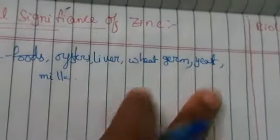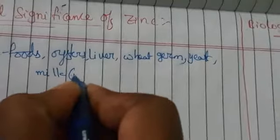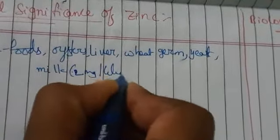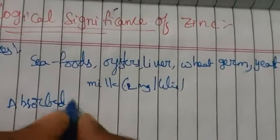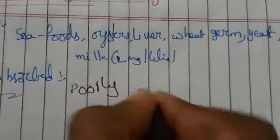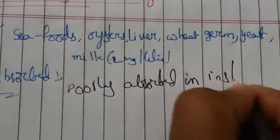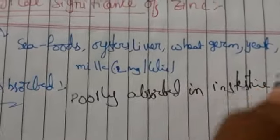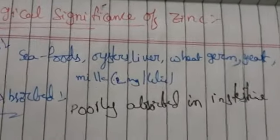Milk contains nearly 2 mg per litre of zinc. Zinc is poorly absorbed — it is poorly absorbed in the intestine.